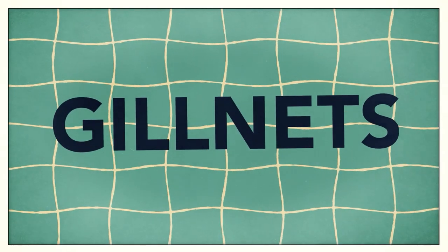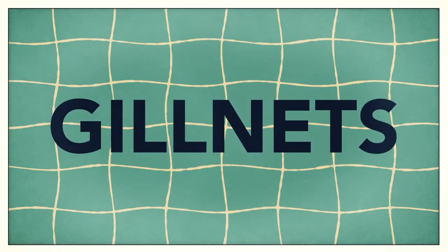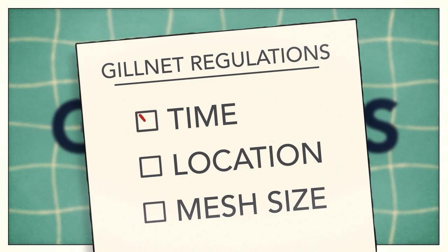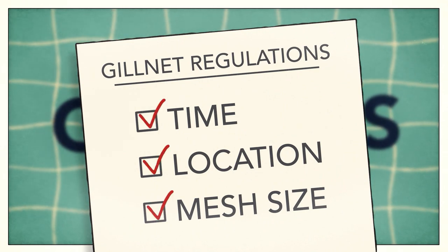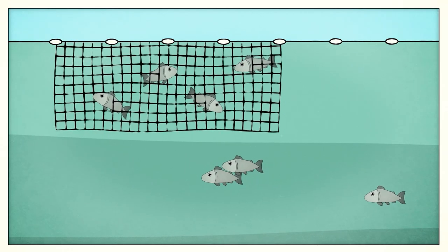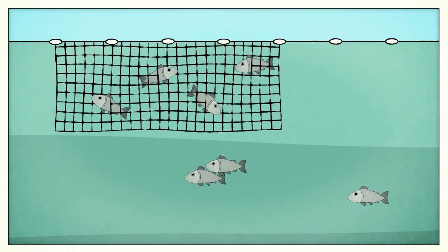Gill netting allows for efficient harvest. Tribes tightly regulate gill net fisheries by time, location, and mesh size. The net itself covers only a portion of the river, allowing most fish to escape harvest.